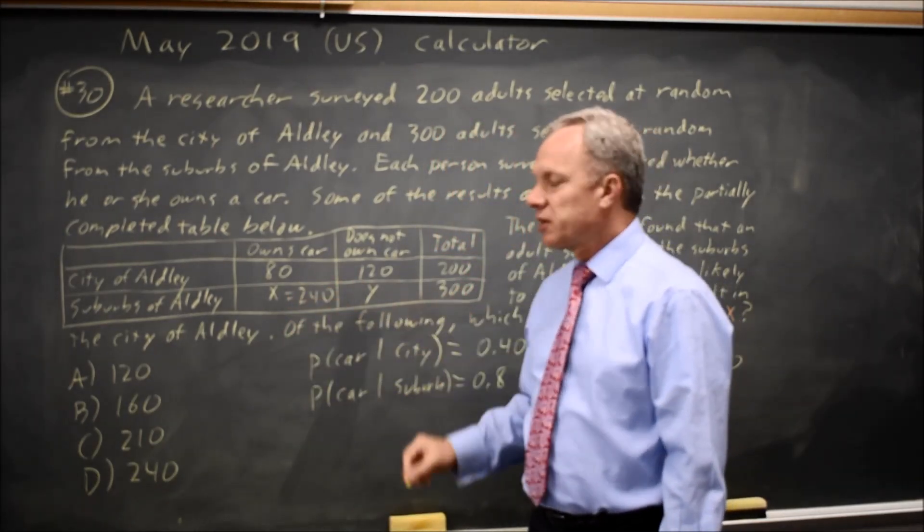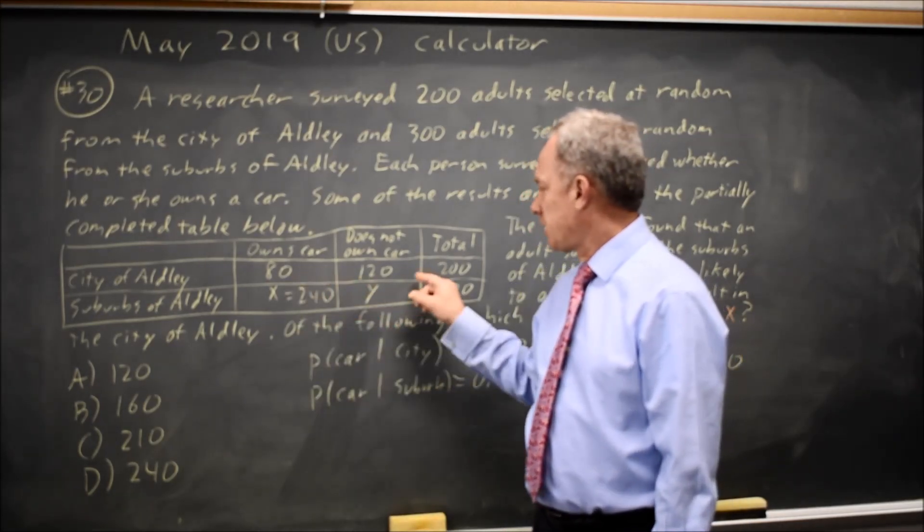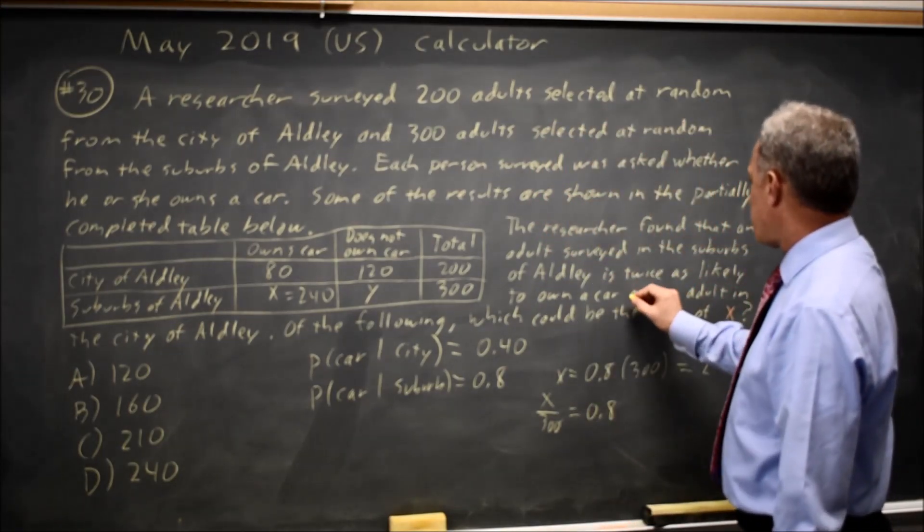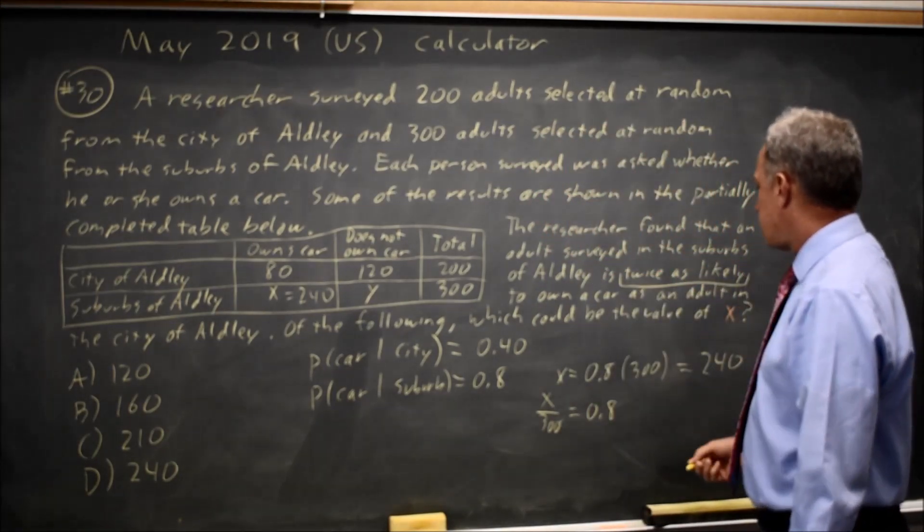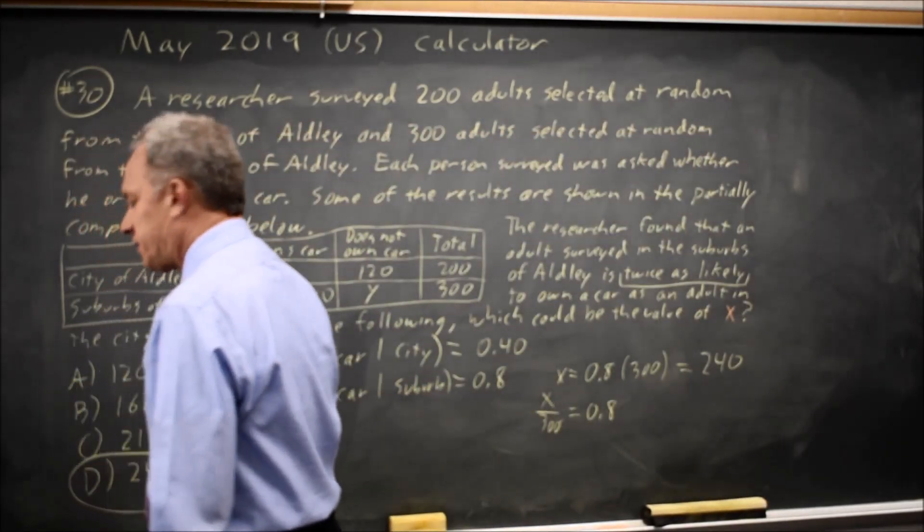That's 240 out of 300, which is 80%, whereas in the city it's 80 out of 200, which is 40%. So suburbs are twice as likely to own a car as the city. The correct answer is D.